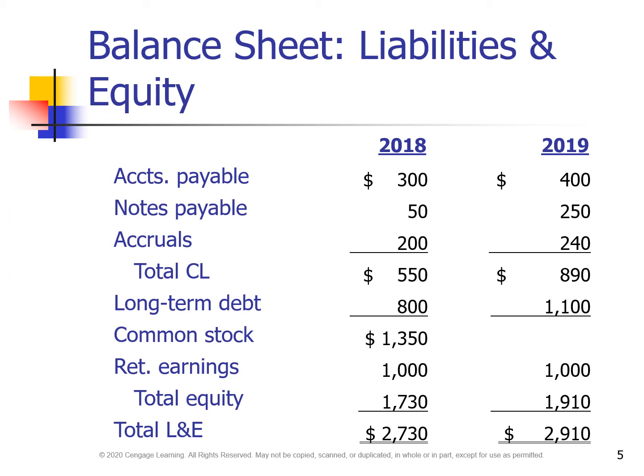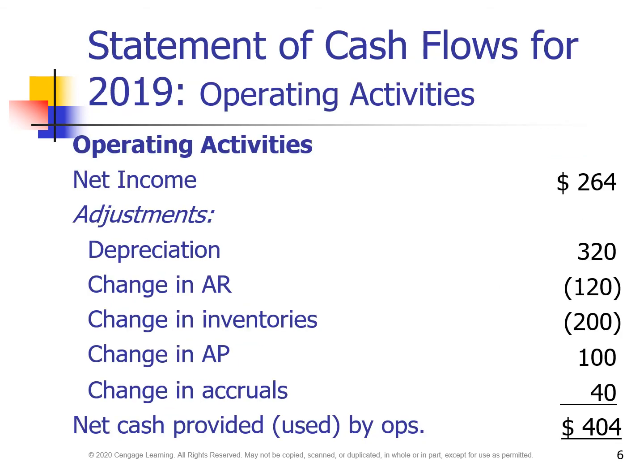The liabilities and equities should always be equal to the total assets. The liabilities include current liabilities and long-term liabilities. The current liabilities include accounts payable, notes payable, and accruals. The owner's equity includes common stock and retained earnings.